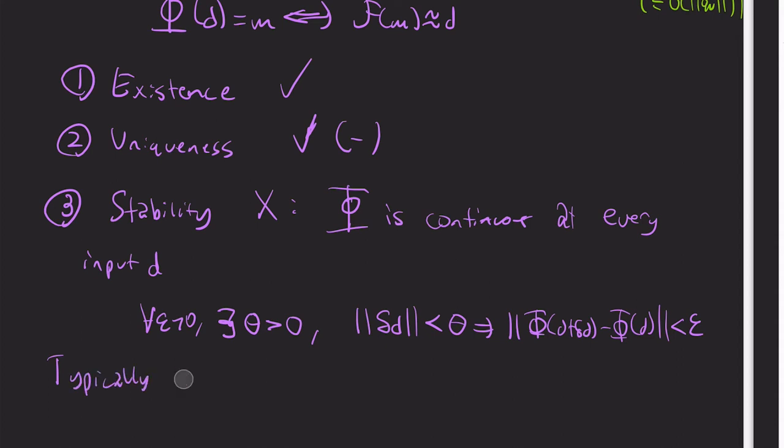implies that the norm of phi of d plus delta d minus phi of d is less than epsilon. So typically three does not hold.